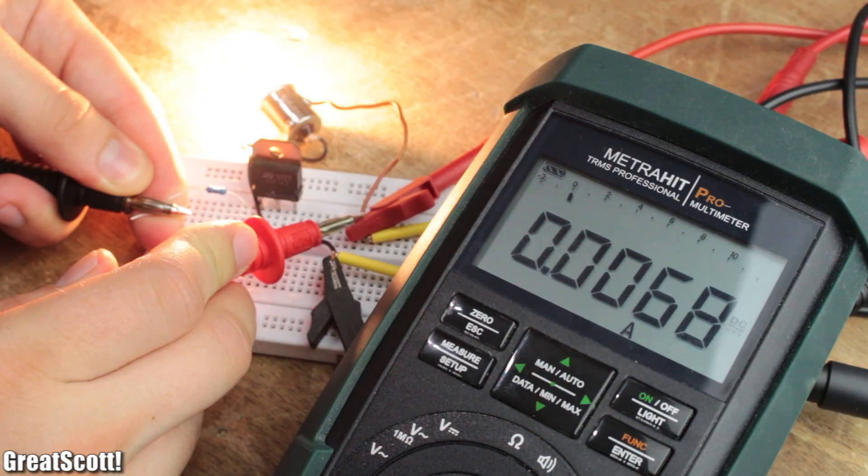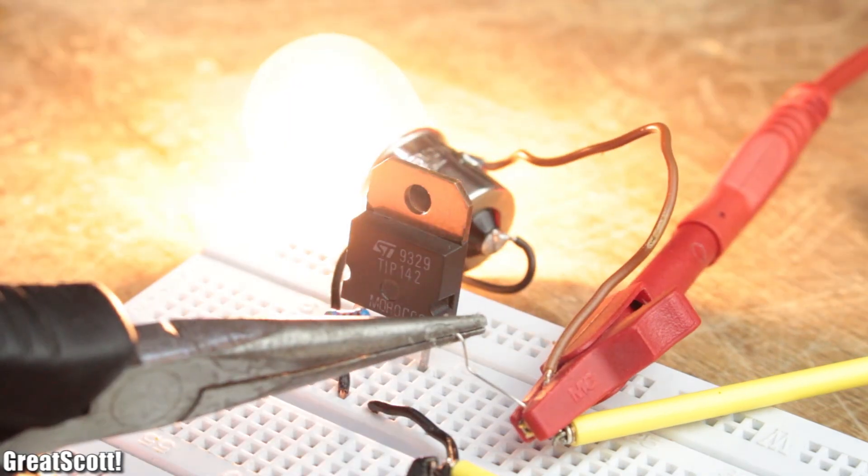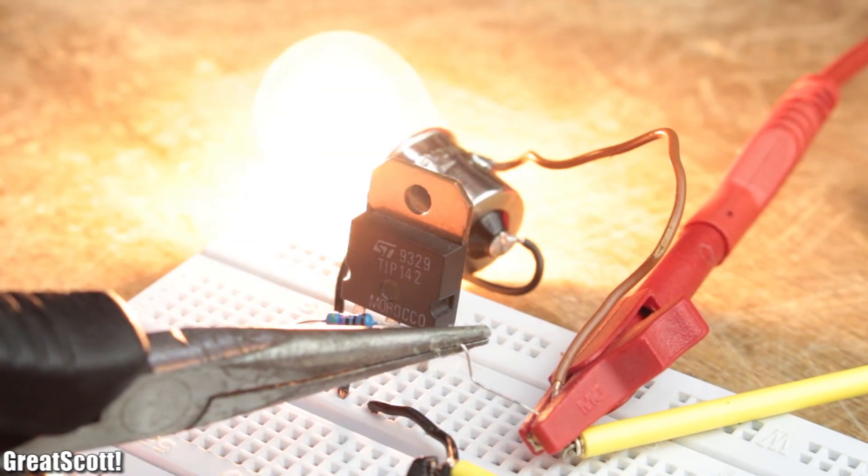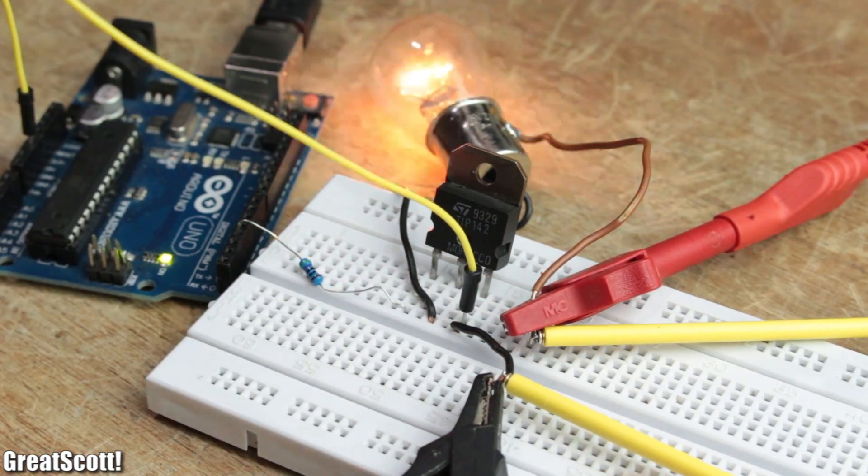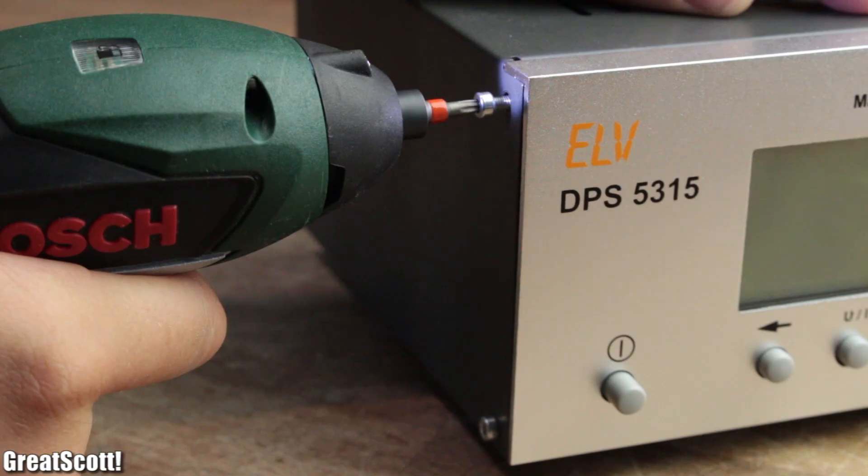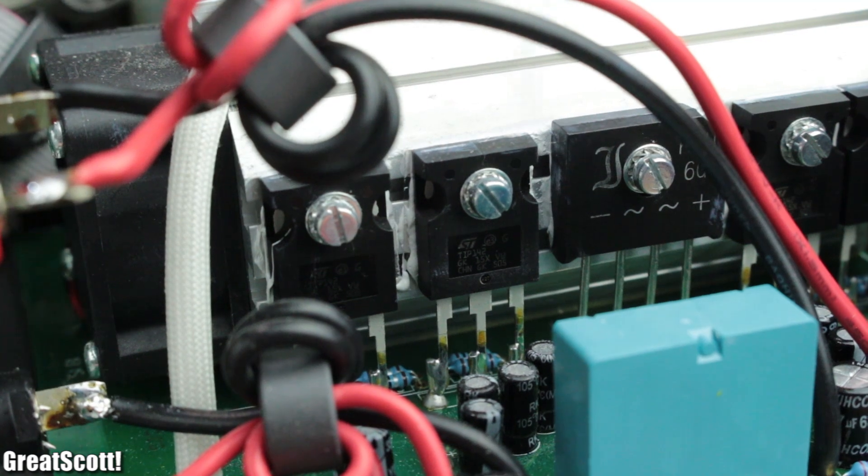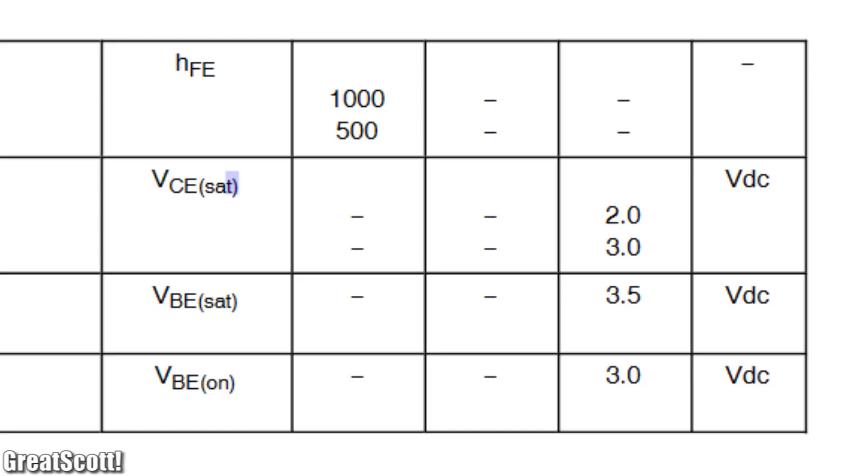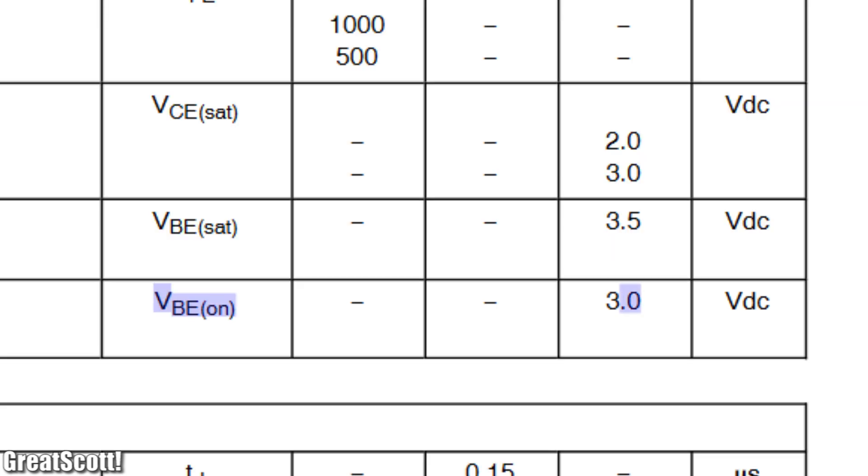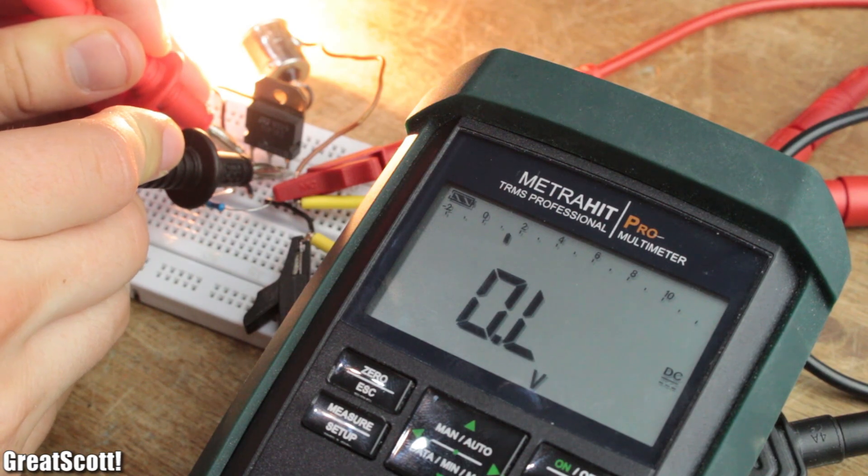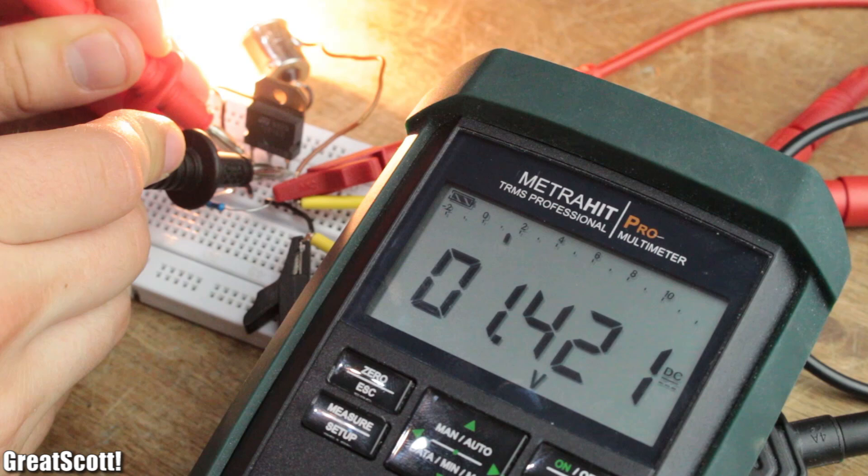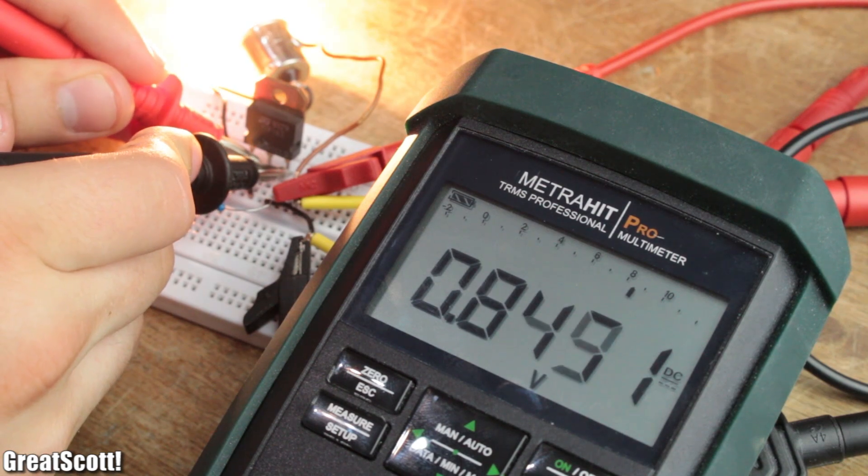And thus the transistor only needs a small base current of, in this case, 8.5 milliamps in order to switch on and off our 3.8-amp load, which is even small enough to sink the current directly from the Arduino. That is why they are often used in variable lab bench power supplies to regulate the output current. But on the other hand, they feature a bigger collector-emitter and base-emitter voltage, which can lead to more power loss.